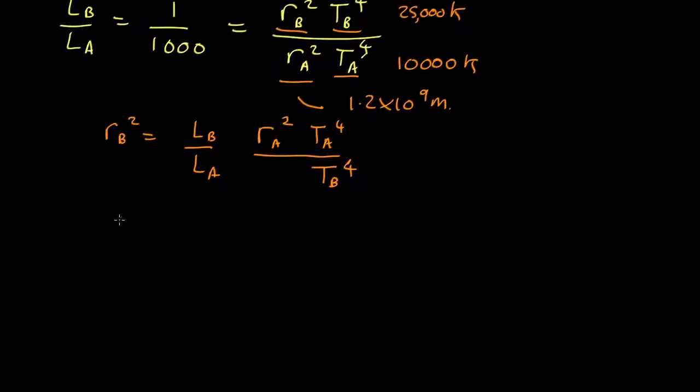Take the square root, and we end up with r_B equals r_A times the square root of the luminosity ratio times the ratio of the temperatures squared.